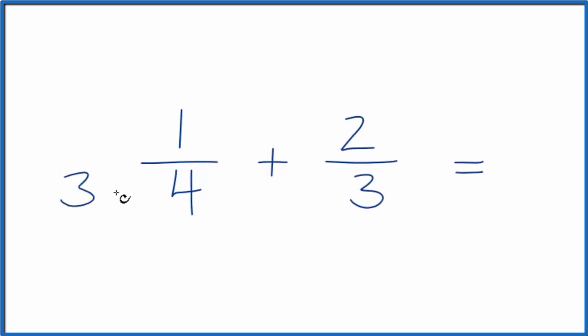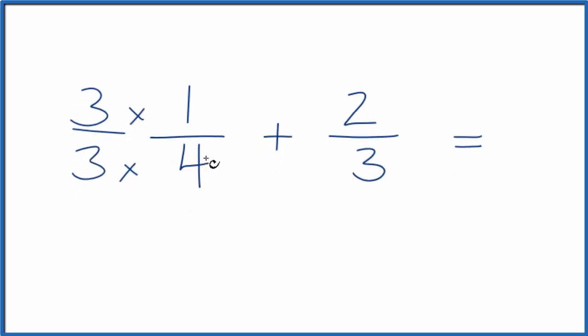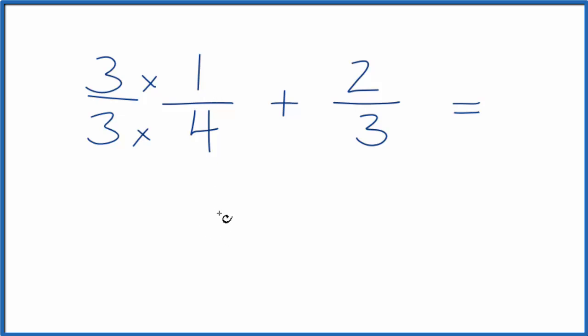We can multiply three times four, and that would give us 12. But we can't just multiply the bottom here. We need to multiply the top as well, because three over three, three divided by three is one. So we don't change the value that way. Three times one is three, three times four is 12. So we have our denominator of 12 over here.